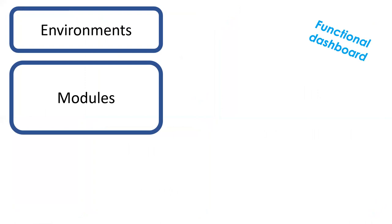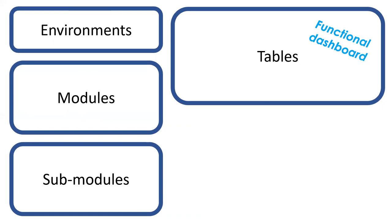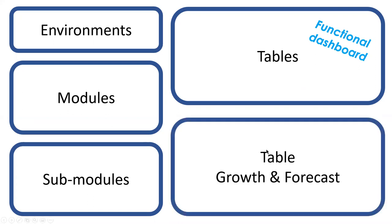Maybe a business analyst doesn't need this level of technical detail — they want a functional dashboard. In this way, we can pick an environment, look at the modules in that environment based on system codes within JD Edwards, and then the sub-modules within those modules. We can identify that 09 for general ledger is part of the financials module. Drilling down, when we select a module or sub-module, we can see information about the tables — individual tables, record counts, sizes — and we can sequence by size or by record counts.